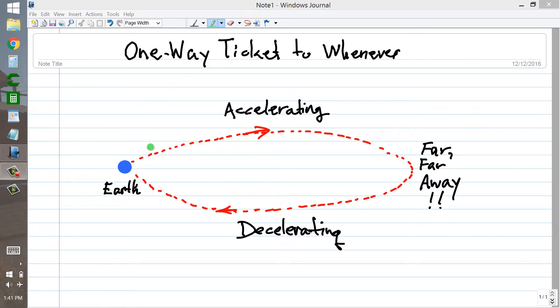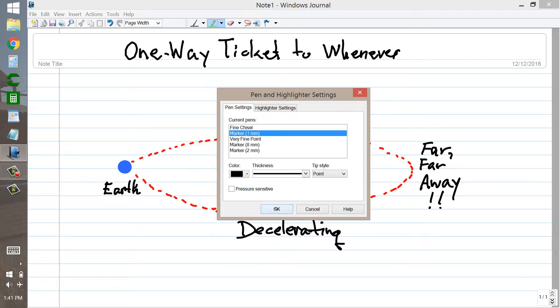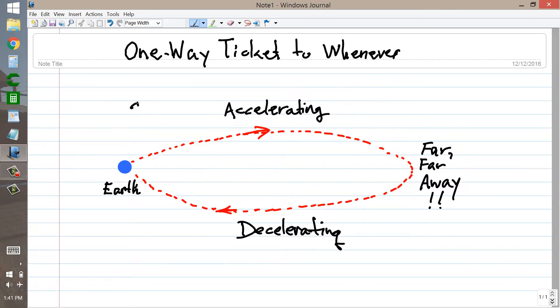Imagine that you have a spaceship that can accelerate at one gravity, that is 9.8 meters per second per second, or 9.8 meters per second squared, indefinitely.